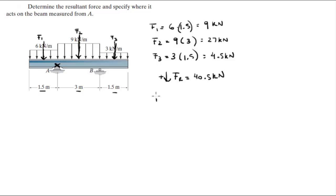And the moment at A is equal to this moment arm right here which is at minus 0.75, this one which is at 1.5, and this one which is at 3 plus 0.75 which is 3.75.